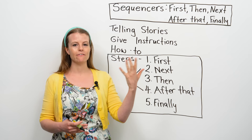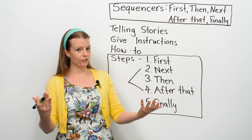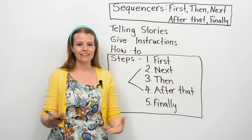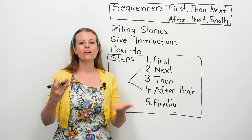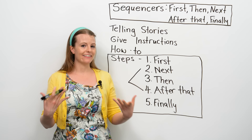We use sequencers when we are talking about steps or the order of doing things. We use sequencers when we tell stories, and we use sequencers when we give instructions, such as how to do something. When we tell someone how to do something, we're giving them a lot of different steps, and sequencers help us organize these steps. So let's get started and see some examples of how we use sequencers.